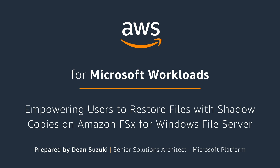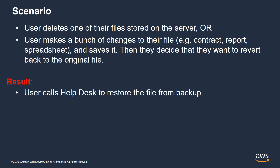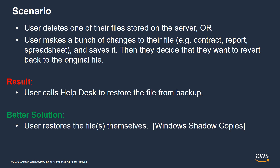When you couple Amazon FSx with shadow copies, it empowers users to do their own file restores through the Windows UI. Imagine your users delete some files on the file server, or make changes to a contract, spreadsheet, or document, save those changes, and then decide they want to go back to the original version. In both cases, the user typically calls a help desk to restore the file from backup. A better solution is to empower users to restore files themselves through Windows Explorer — and that's what Windows Shadow Copies provides.